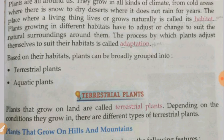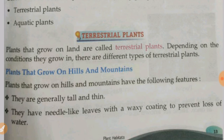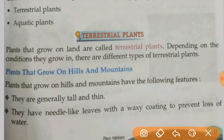Terrestrial plants are the plants that grow on land, and aquatic plants are the plants that grow in water. Plants that grow on land are called terrestrial plants.